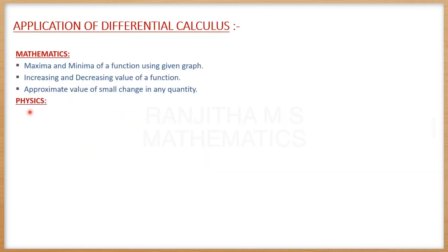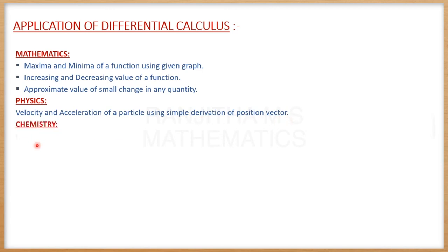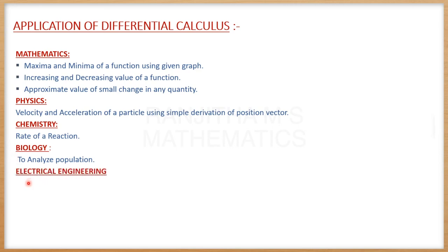In the field of Physics, Differential Calculus is used to find velocity and acceleration of a particle using simple derivation of the position vector. In the field of Chemistry, it is used to find the rate of a reaction. In the field of Biology, Differential Calculus helps to analyze population. Other than these fields, Differential Calculus is also used in Electrical Engineering, Space Flight Engineering, and Finance and Statistics. So calculus has a wide range of applications and it is very important to study.